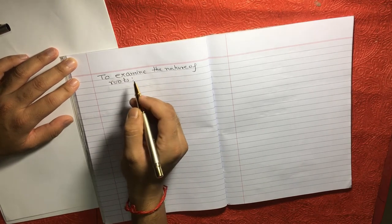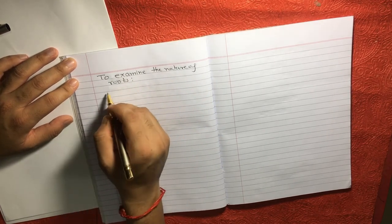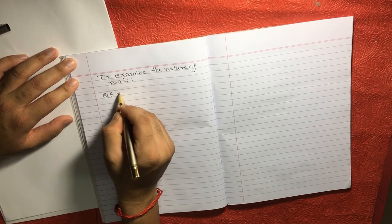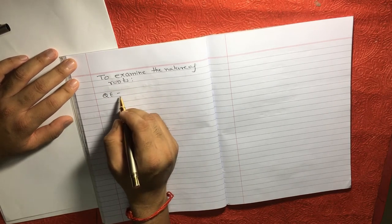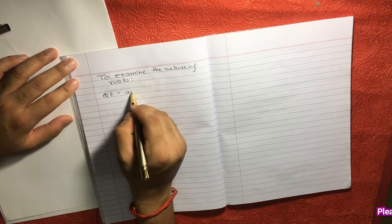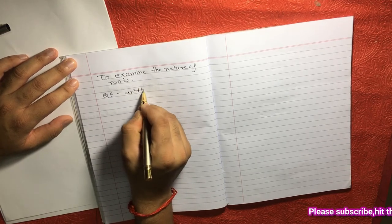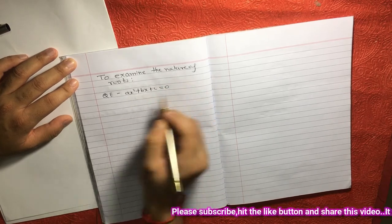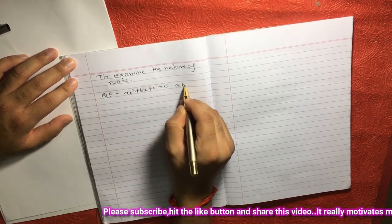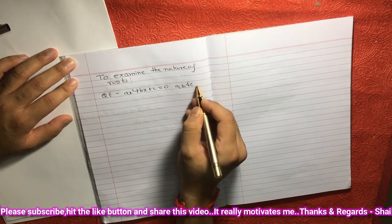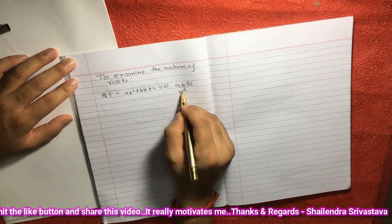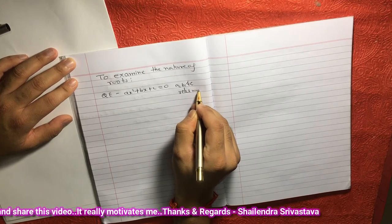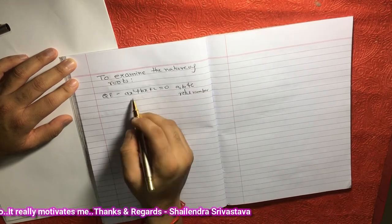What does it mean? It means, let's say, if any quadratic equation, I am just writing in short, QE means quadratic equation. Let's say, AX square plus BX plus C is equal to 0, where A, B and C are real number. Real number means this could be 1, 2, 3, 4, any number.